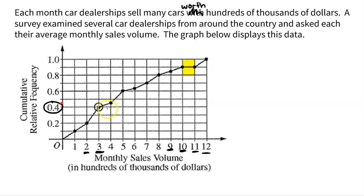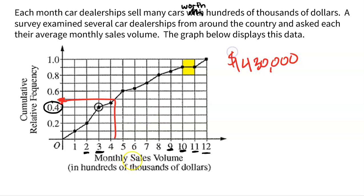Lots of great questions. What's the median? All you have to do is locate the 50th percentile, move it over, come straight down, and do a little bit of estimating. Maybe $430,000 would be the median — somewhere a little bit more than that 4, not quite halfway. So about $430,000 would be a pretty good estimate of the median.